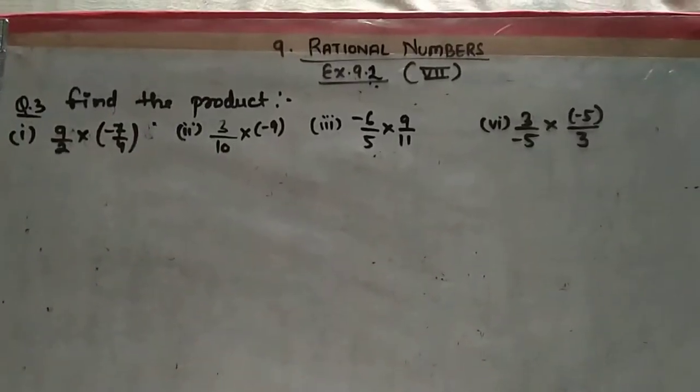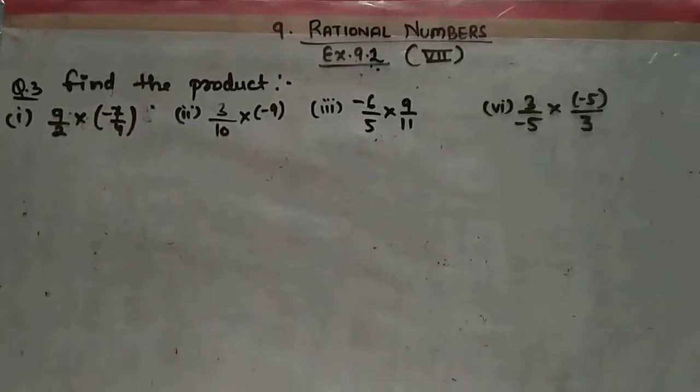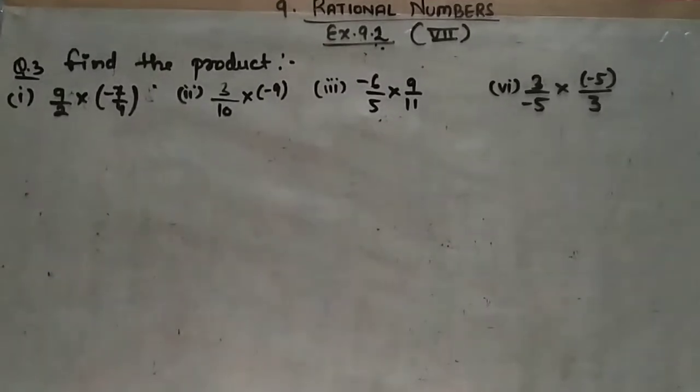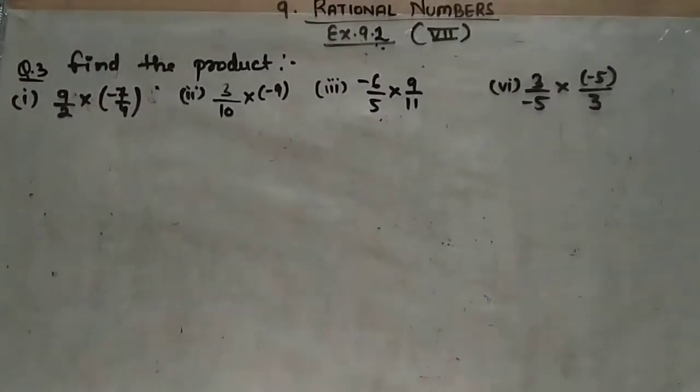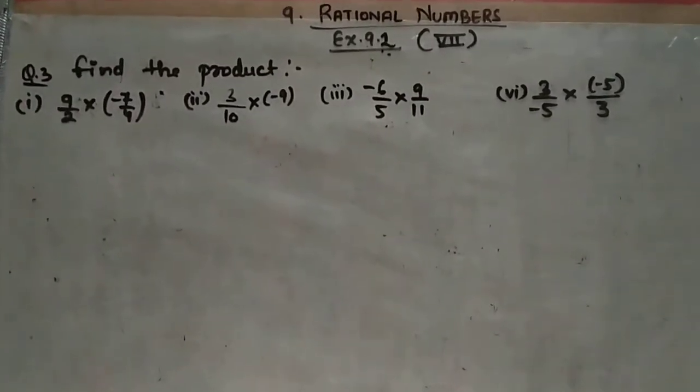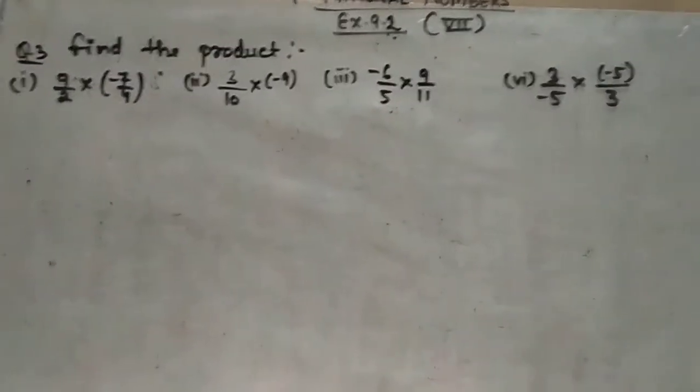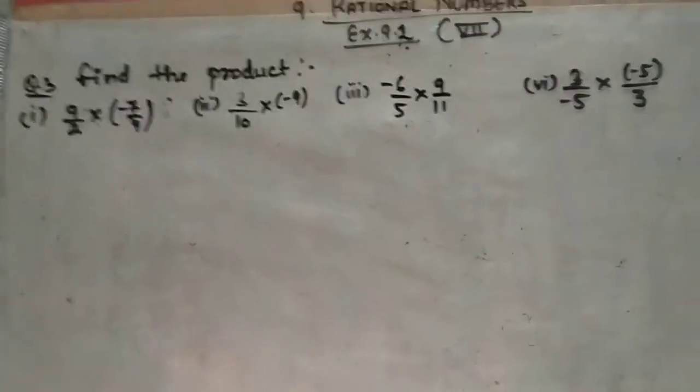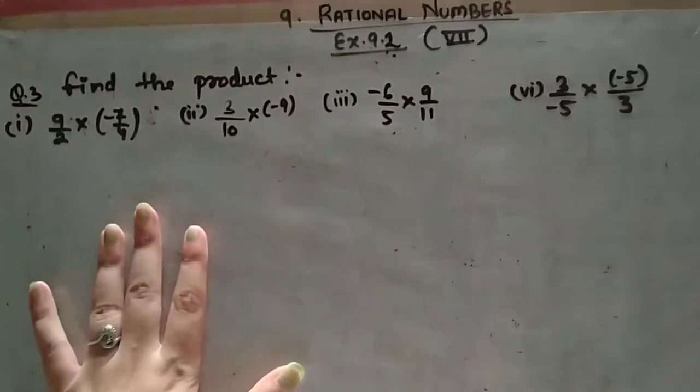Hello everyone, welcome to my channel NCERT Learning Hub. Today we are going to solve question number 3 of Exercise 9.2. The question is find the product - we have to multiply the rational numbers and find the product.